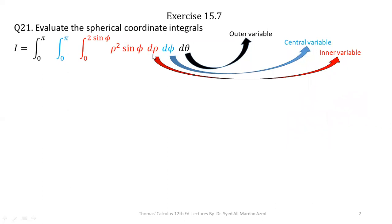We will always perform integration first with respect to rho, then on the outcome of that integration we will perform integration with respect to phi, and then after completing phi we will perform integration with respect to theta. The limits of rho are 0 to 2 sine phi, the limits of phi are 0 to pi, and the limits of theta are 0 to pi. When we are performing integration with respect to rho, all other terms containing theta and phi behave like constants — so sine phi is constant with respect to rho.